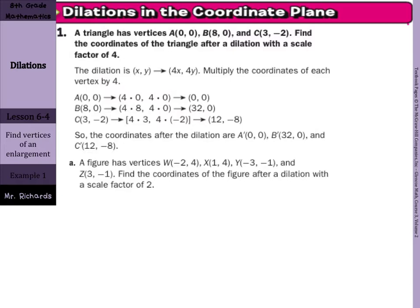A triangle has vertices (0, 0), (8, 0), and (3, -2). Find the coordinates of the triangle after dilation with a scale factor of 4. As you can see here, we take our (x, y) and multiply all the x's and the y's by 4.